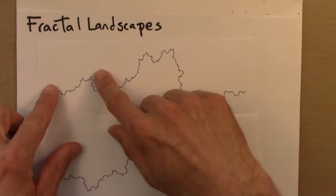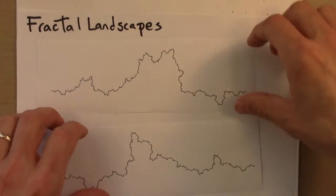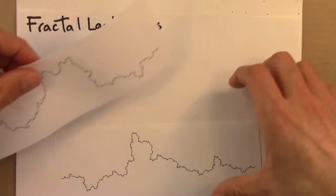So if we take the same idea of generating a fractal at random but apply that to a surface instead of a line, things get even more interesting.